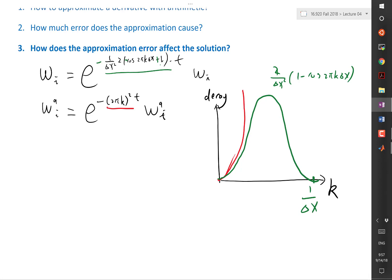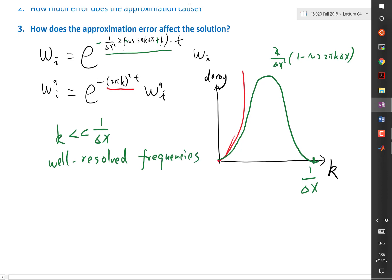So what I'm seeing is that when k is on the order of 1 over delta x, I'm not getting the rate of decay well at all. So for functions that are as oscillatory as the grid spacing, I'm not getting the solution correct at all. That's one thing. Another thing is that for k that is much smaller than 1 over delta x, what we call well-resolved frequencies, am I capturing the rate of decay well? So now let's put an analysis.